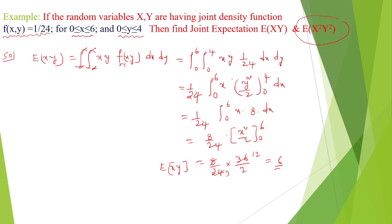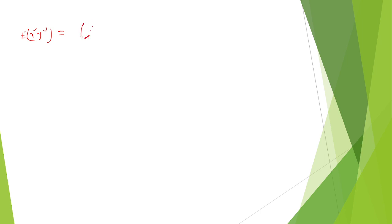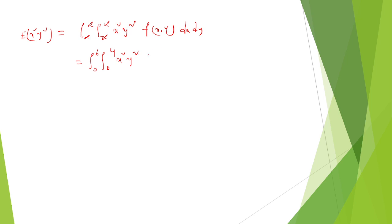Now we calculate E(x²y²). E(x²y²) can be written as the double integral of x²y² times f(x,y) dx dy. The limits are 0 to 6 and 0 to 4, and f(x,y) = 1/24, so we integrate x²y² times (1/24) dx dy.